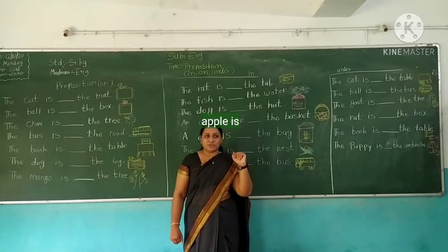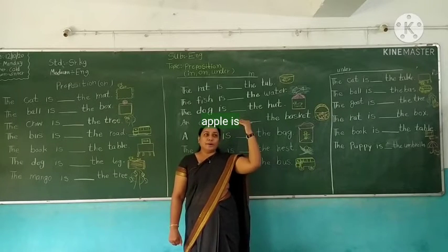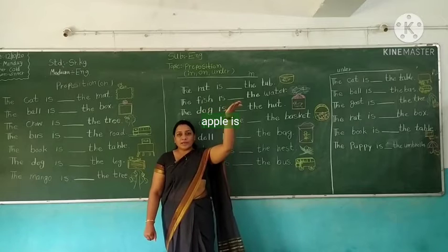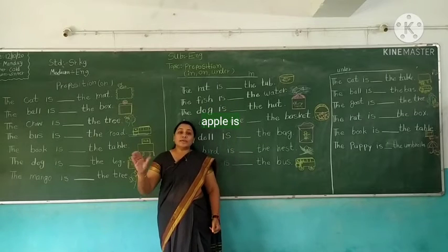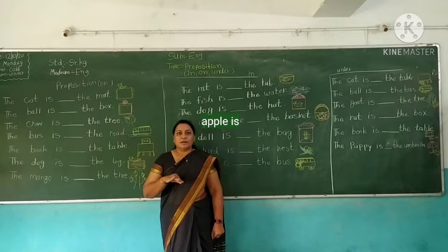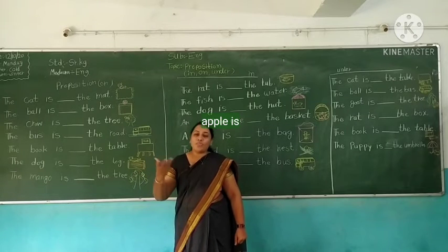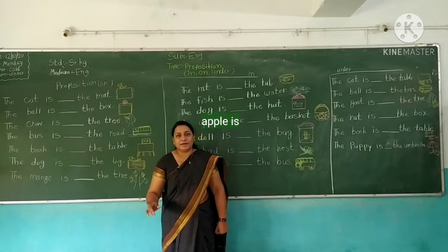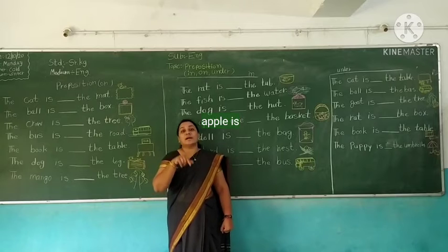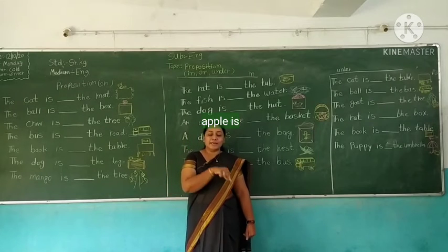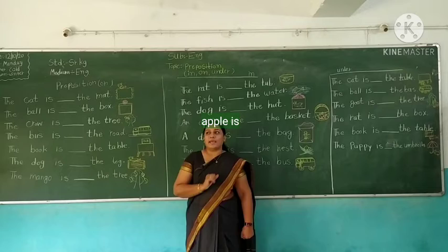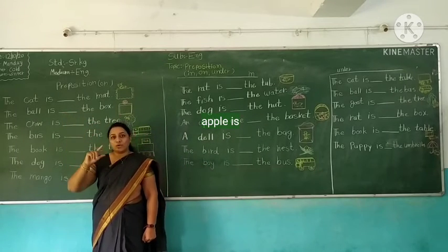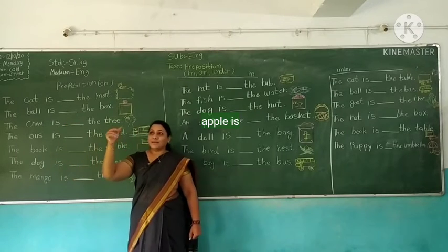Now, let's look at examples for the preposition 'on.' 'On' means 'upar' (above/on top). For example: the fan is on the chair, the book is on the table. Understood? The book is on the table. And for 'under': the cat is under the table. 'Under' means 'niche' (below). The cat is under the table. And the mangoes are on the tree — mangoes are up on the tree.